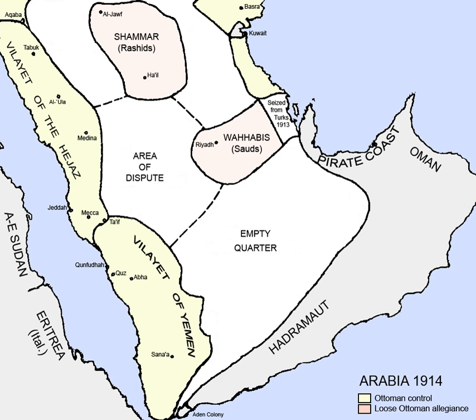South Yemen's origins can be traced to 1874 with the creation of the British colony of Aden and the Aden Protectorate, which consisted of two-thirds of the present-day Yemen. Aden became a province within the British Raj in 1937. After the collapse of the Aden Protectorate, a state of emergency was declared in 1963 when the National Liberation Front and the Front for the Liberation of Occupied South Yemen rebelled against British rule.